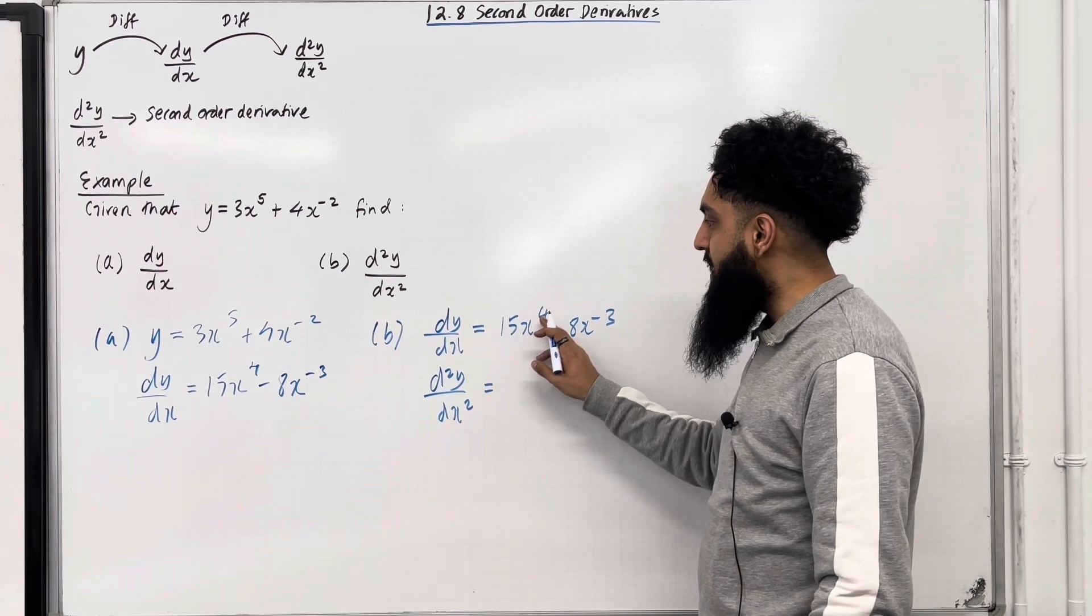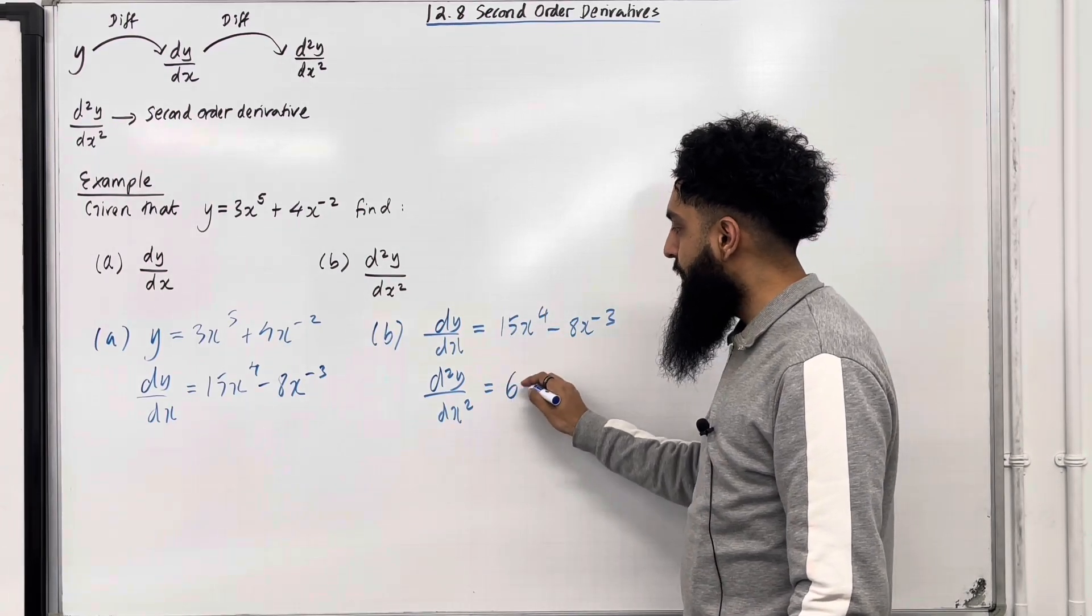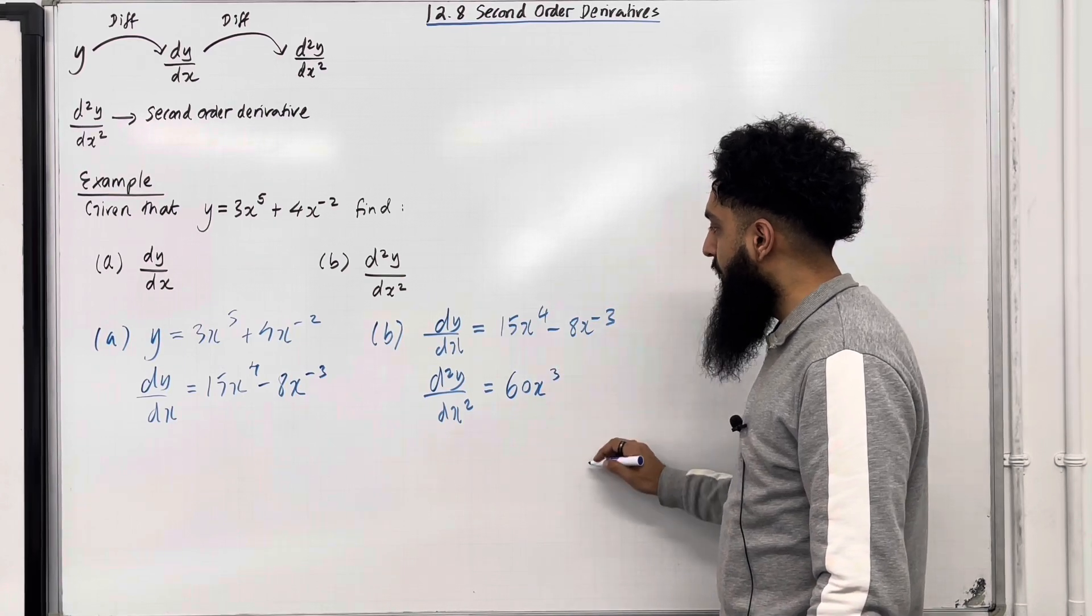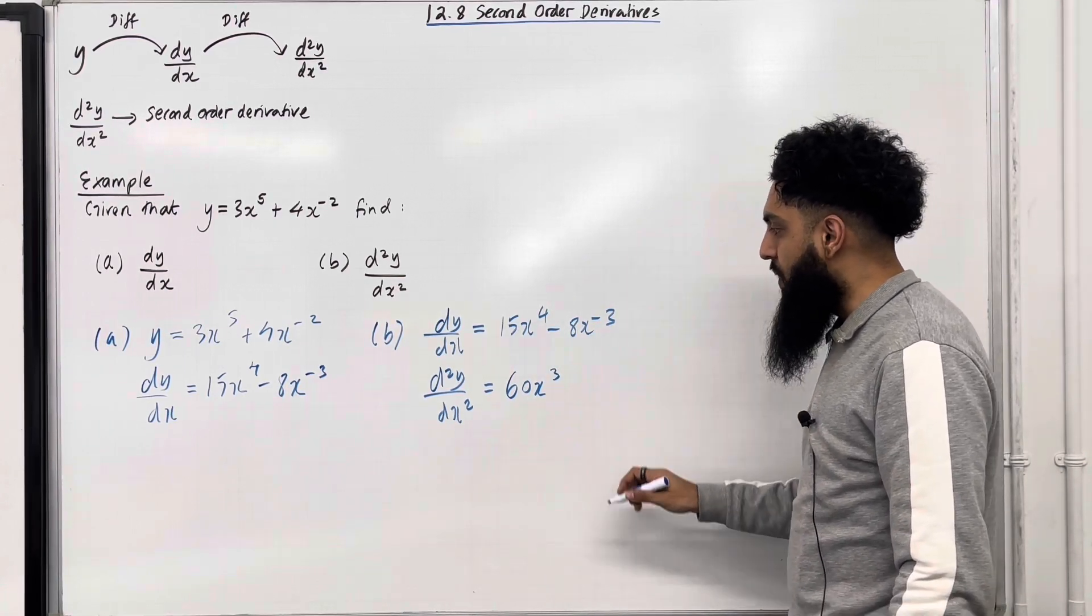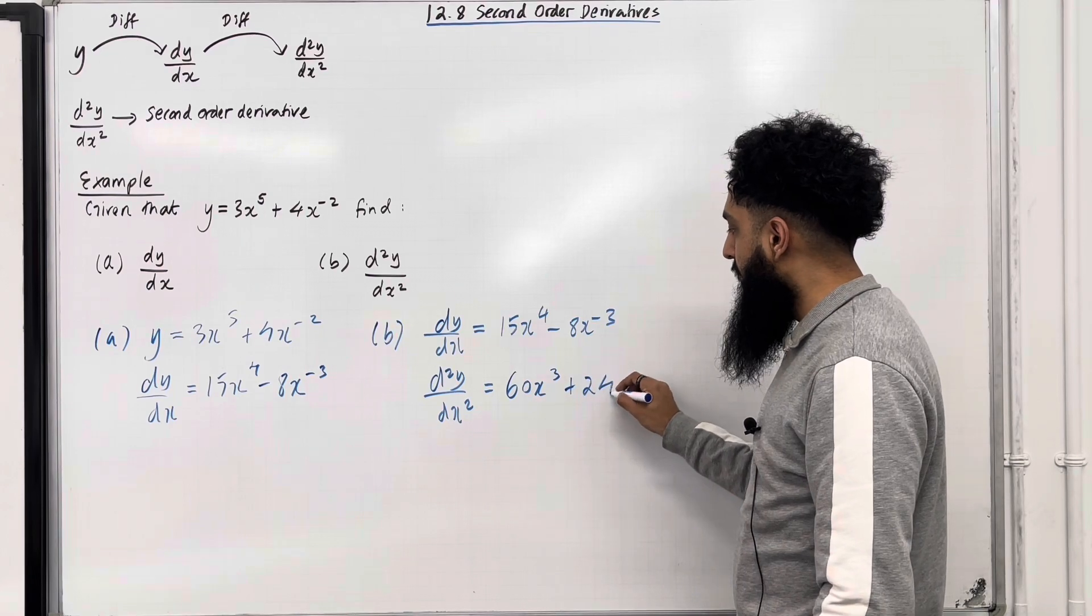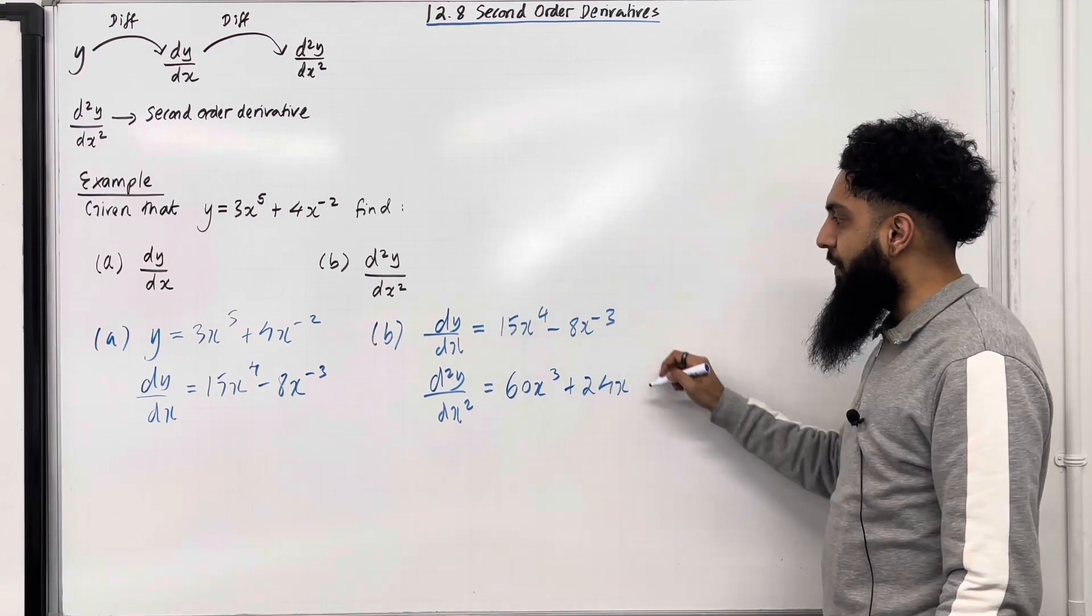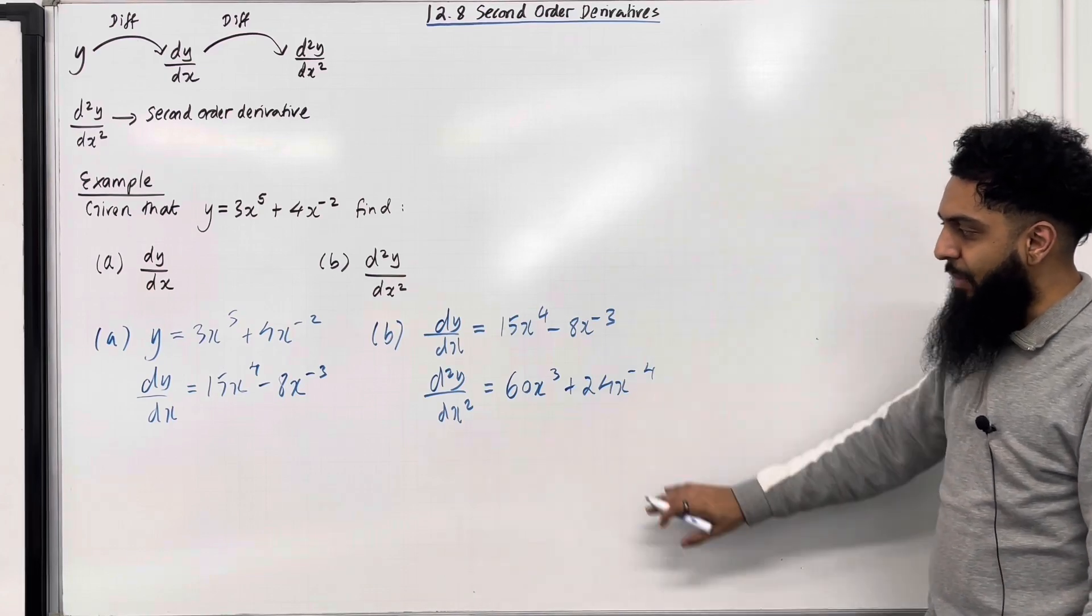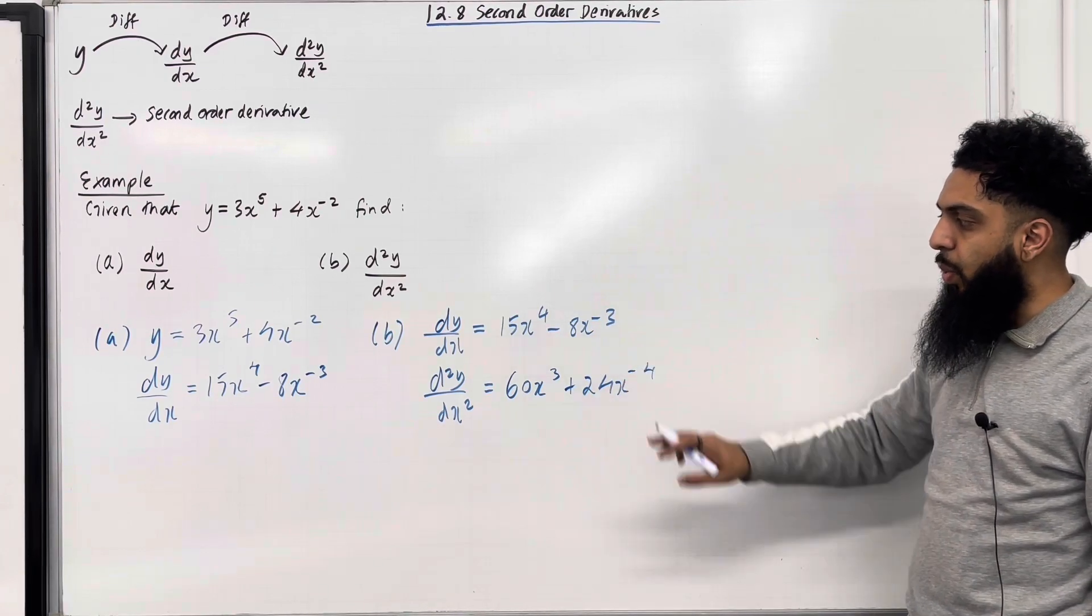So over here I've got 15 times 4 which is 60, x to the power 4 take away 1 which is 3. Then I've got minus 8 times minus 3 which is positive 24, x to the power minus 3 minus 1 which is minus 4. That there is my second order derivative, d²y over dx².